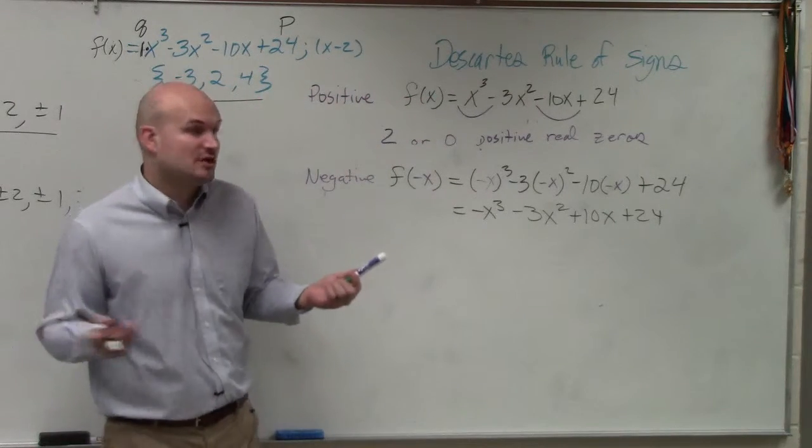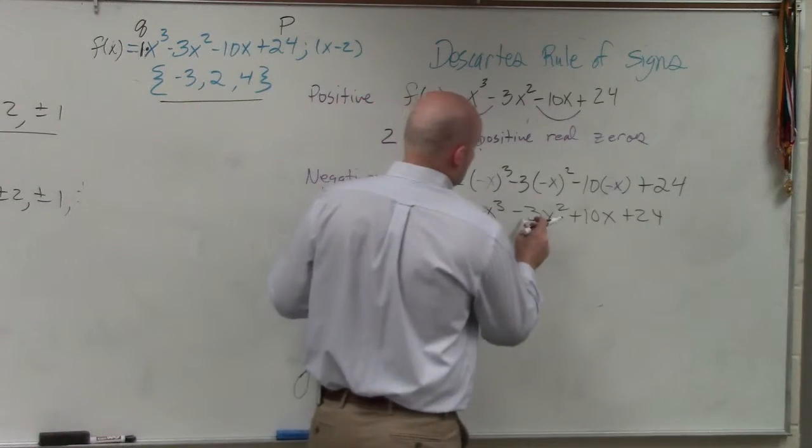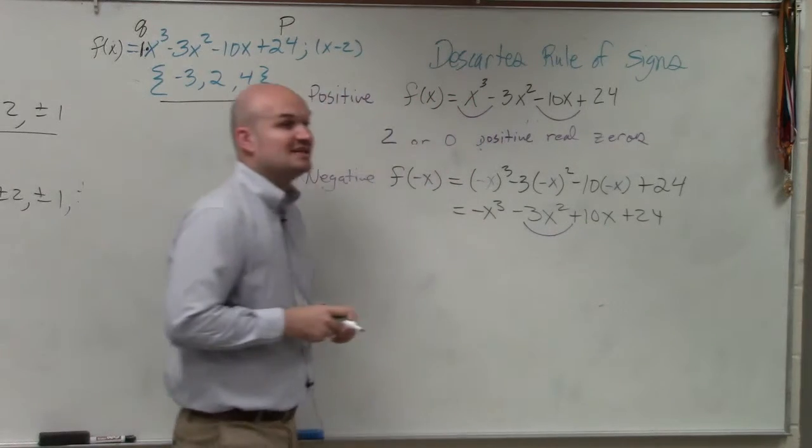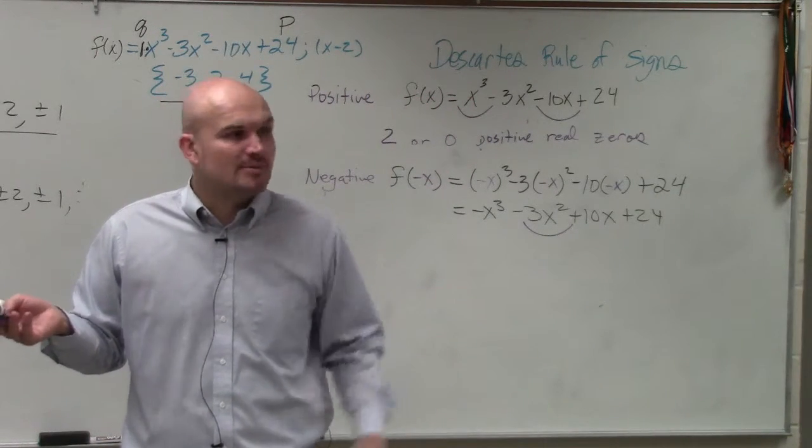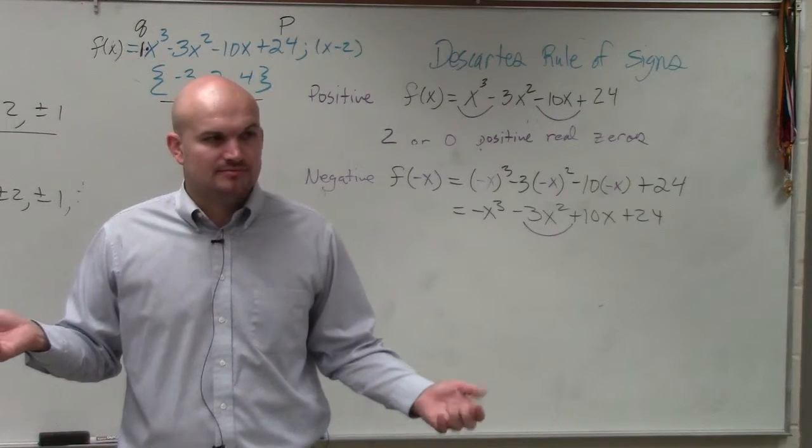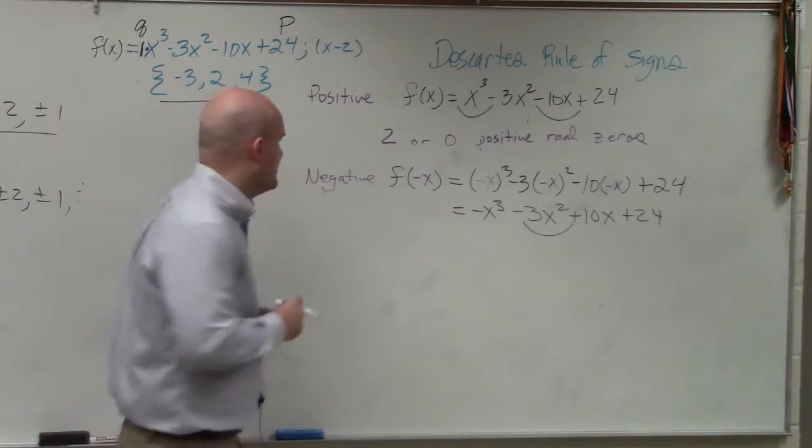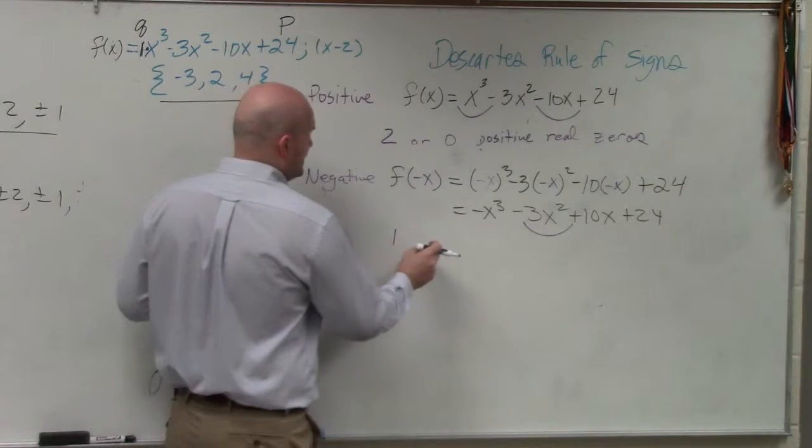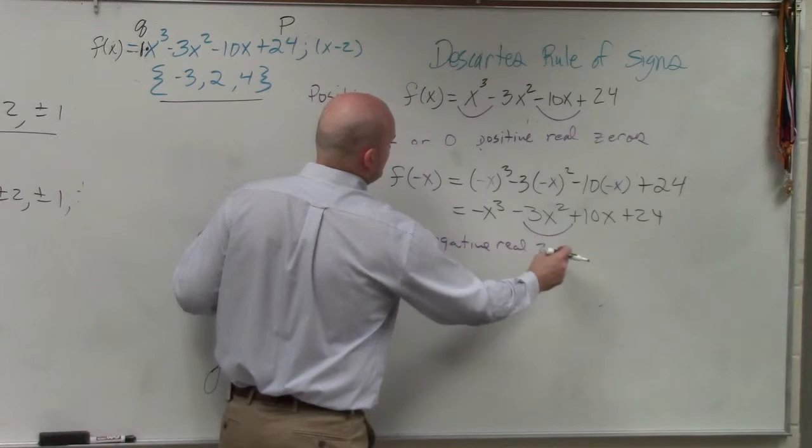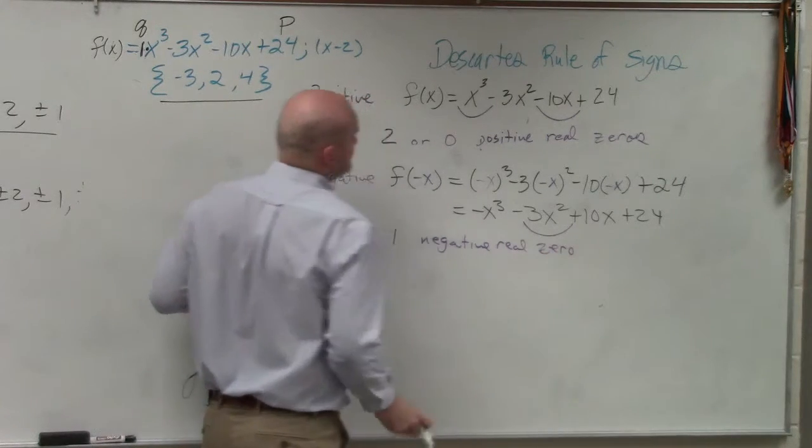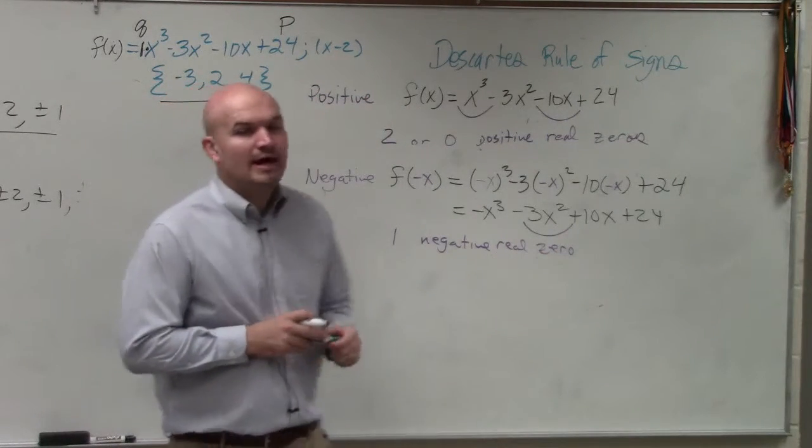Again, we want to determine the number of sign changes. Number of sign changes is 1. Can we subtract a 1 from, or can we subtract an even number from 1 and still have a positive number? No. So therefore, for negative, there is 1 negative real zero.